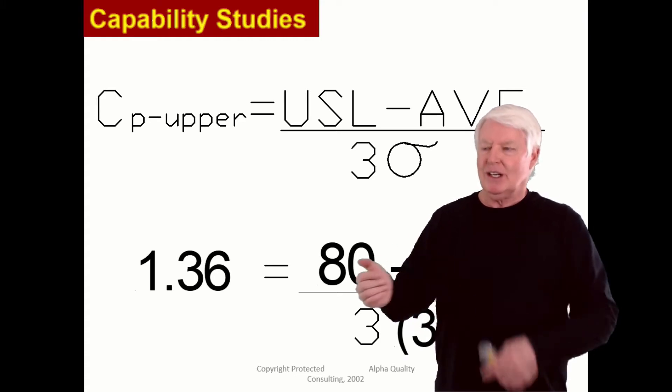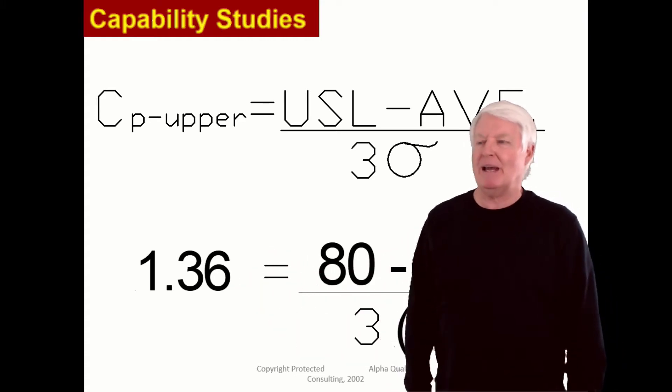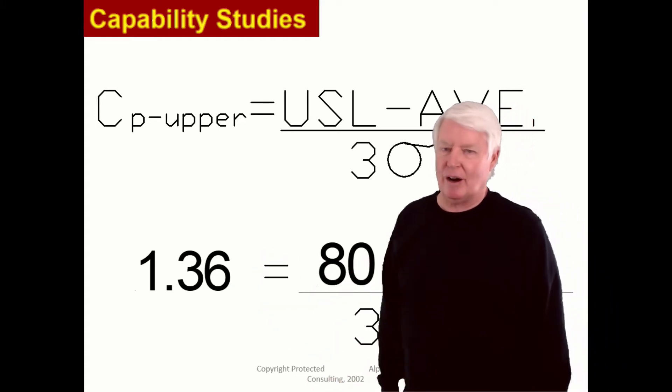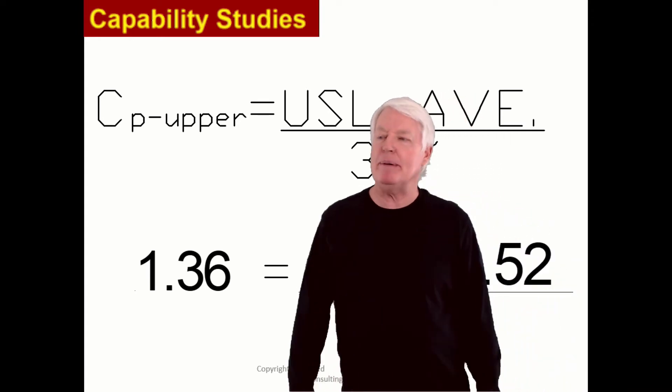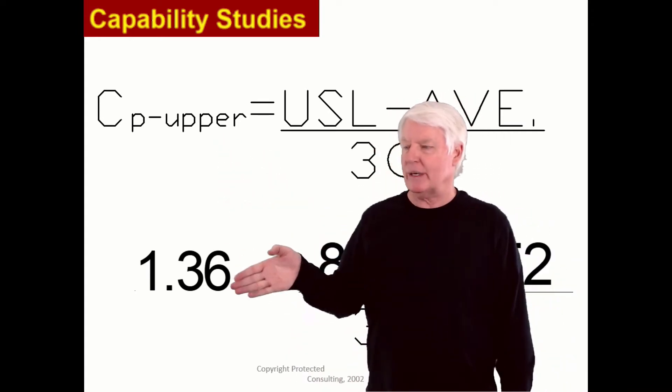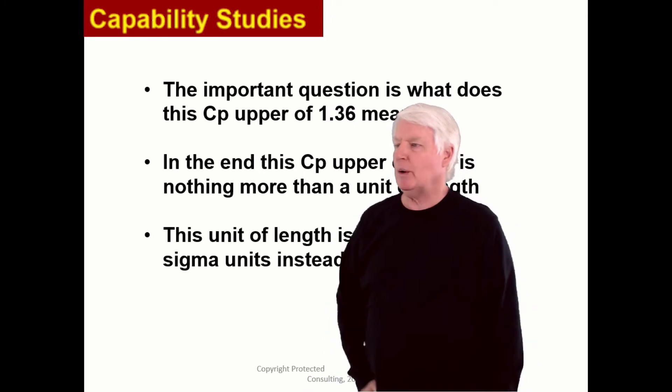Now the problem is, what does that mean? We just calculated it. It's a very easy calculation. But what does a CP upper of 1.36 mean? It's very important you understand that.